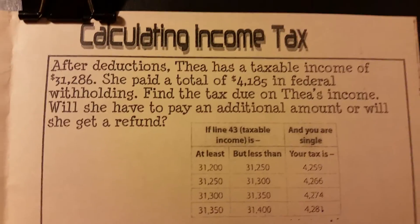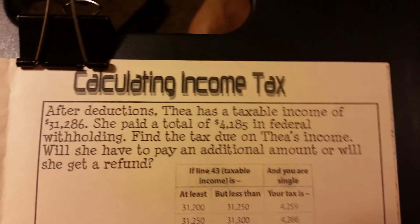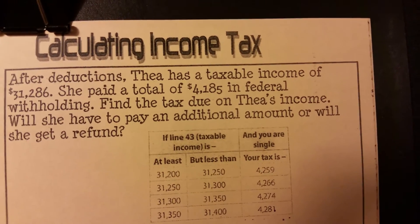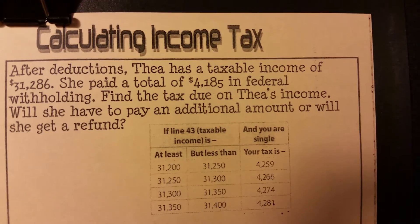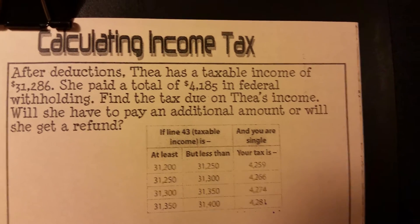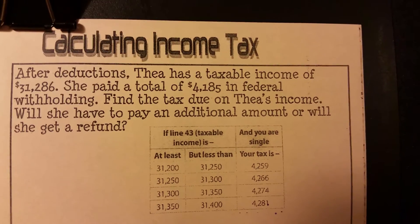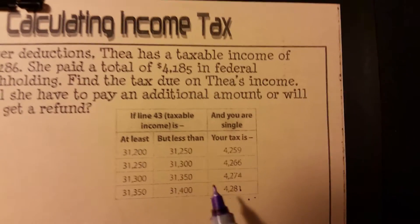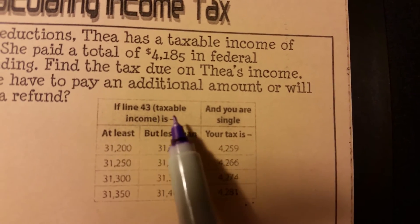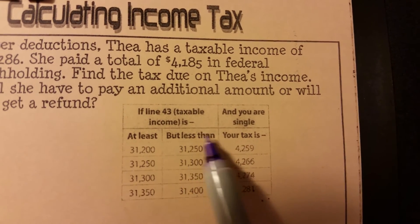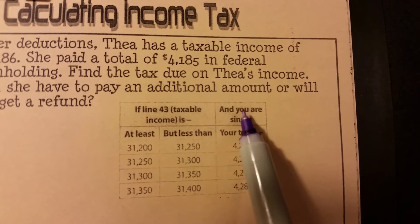Now let's go over to calculating income tax. Here's a scenario: after deductions, Thea has a taxable income of $31,286. She paid a total of $4,185 in federal withholding. We're going to find the tax due on Thea's income and determine if she has to pay an additional amount or will get a refund. We need to look at a tax bracket — if line 43, the taxable income of $31,286, falls between certain amounts, then your tax is the amount in the third column.